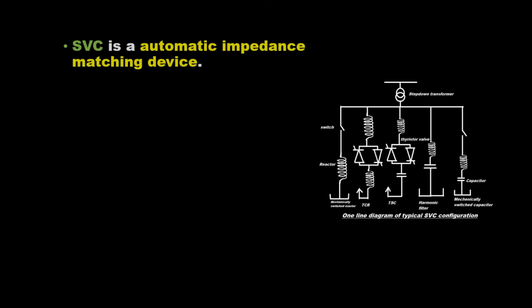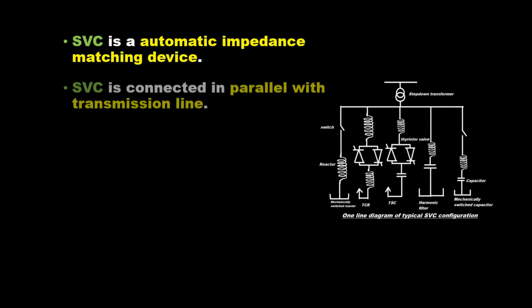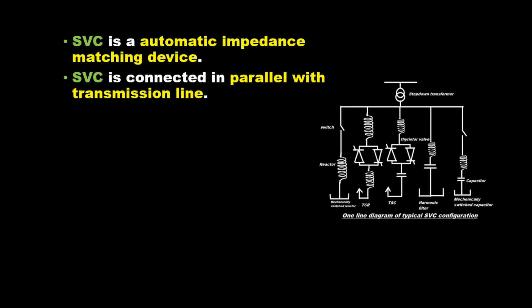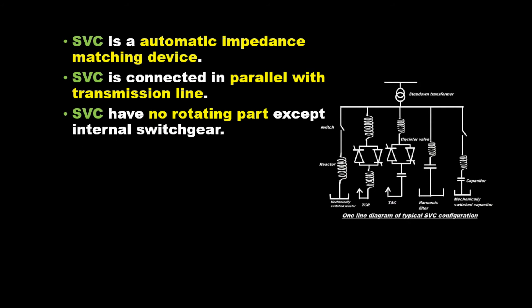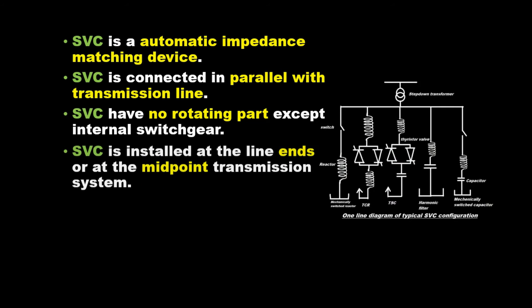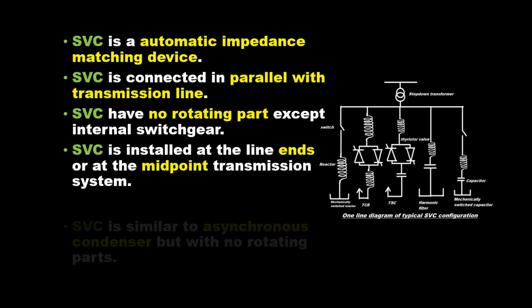SVC is an automatic impedance matching device. It is connected in parallel with the transmission line and has no rotating parts except internal switchgear. SVC is installed at the line ends or at the midpoint of the transmission system.